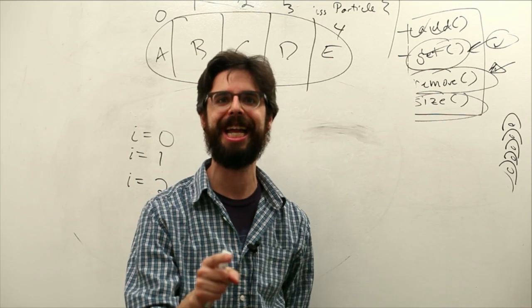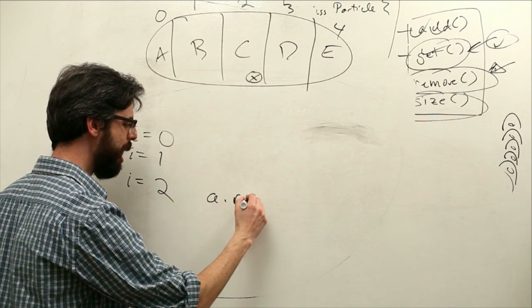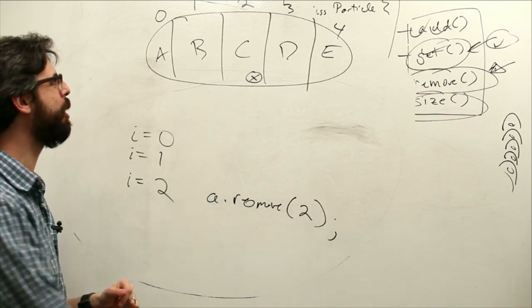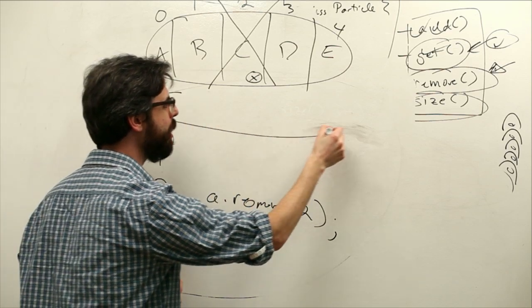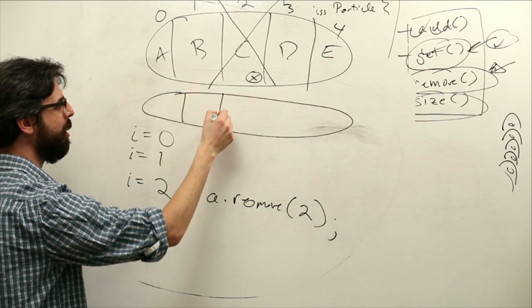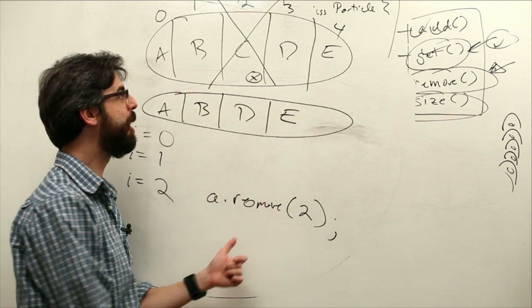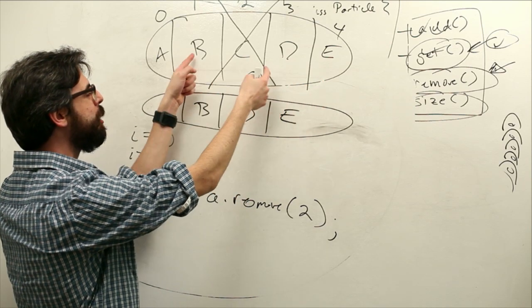We need to delete it from the ArrayList. So we're going to say A.remove 2. Now what happens to that ArrayList when we delete that element? Let's draw that ArrayList again. Here is what the ArrayList looks like now once we've deleted that element. It's A, B, D, E. Because we removed C. D and E slide over to fit into the spots next to B. That's what the ArrayList looks like now.